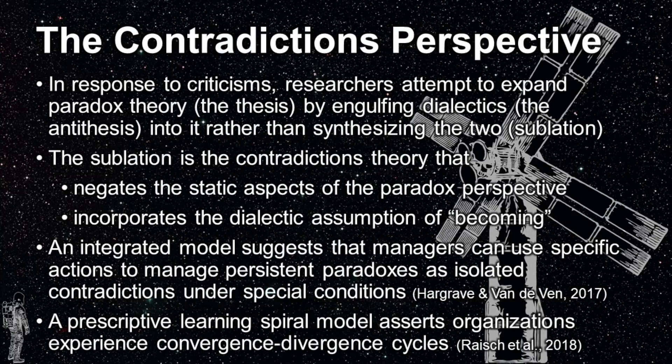Finally, the chapter addresses the contradictions perspective, which resulted in response to shortcomings of revisions proposed to the paradox perspective following critical reviews. Researchers attempted to expand paradox theory — considered the thesis — by incorporating parts of the dialectic perspective, the antithesis. Unfortunately, the paradox theory extensions did not try to create a synthesized perspective greater than itself or the dialectics perspective, and that's where the contradictions perspective comes in. The contradictions theory negates the static aspects of the paradox perspective and incorporates the dialectic assumption of becoming.